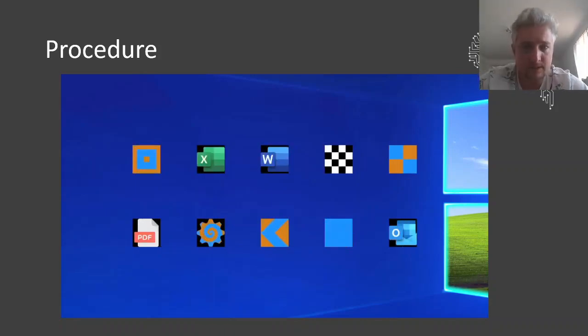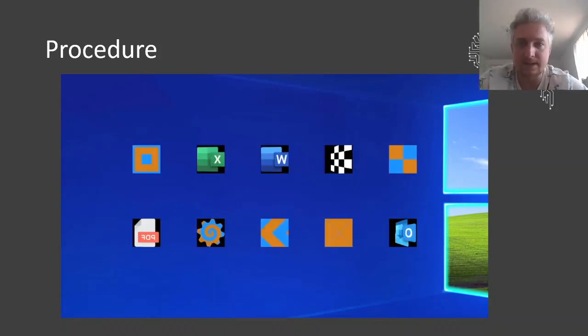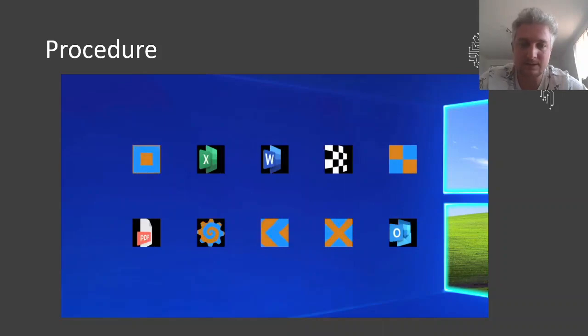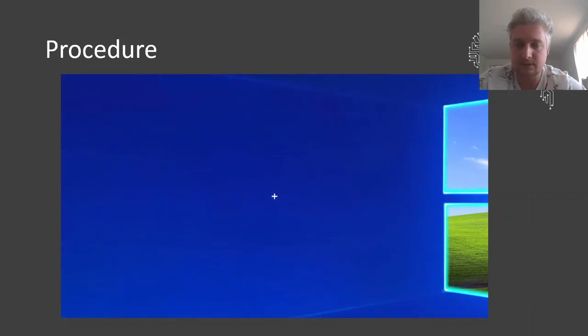Participants were asked to remember the target stimulus and find it in a grid of all the other stimuli which was presented afterwards. They had to look at the stimulus until the screen changed again, and we verified with an eye-tracking system that participants were actually looking at the correct stimulus.